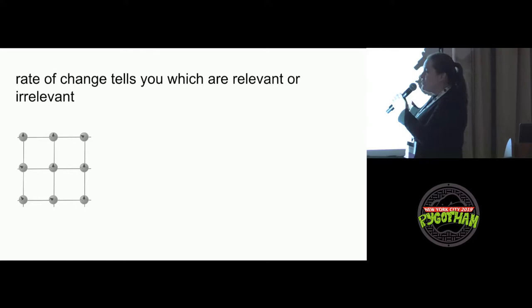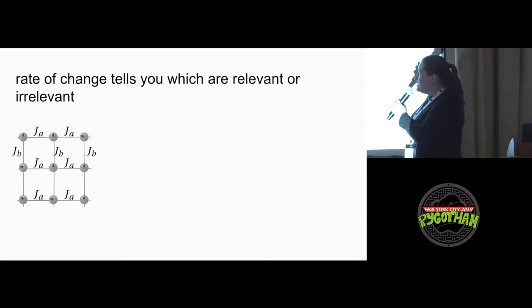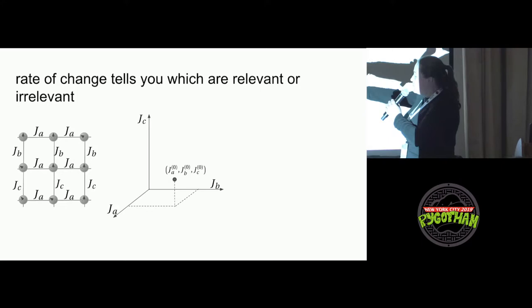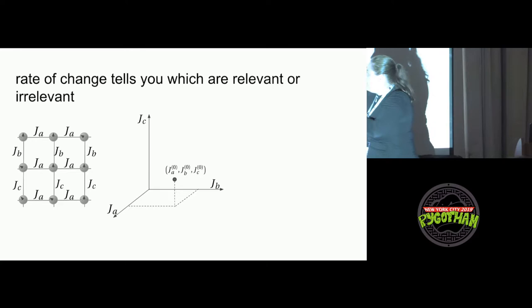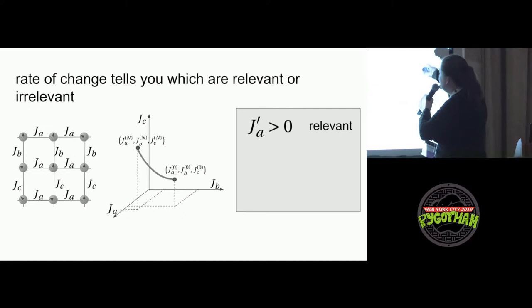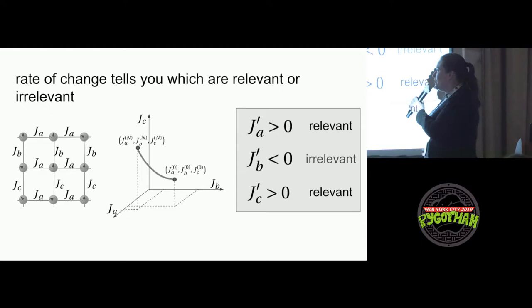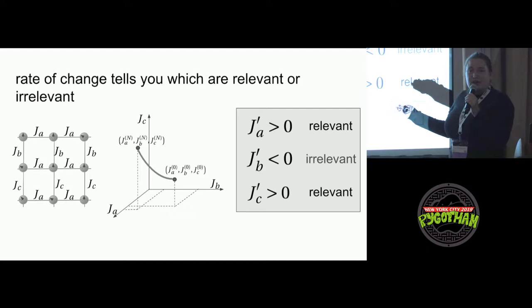So let's take a simple example. We have this lattice. We have one interaction on the horizontal ones. And then two different ones on the vertical ones. So this is a three dimensional space of interaction strengths. And we start at this point. This is our fundamental level. So after a few of these steps, we reach another point. So now we have different interaction strengths. And what we can actually see is that the first one increased a little. We call that relevant. The second one decreased, which we call irrelevant. And the third one also increased. So that's also a relevant variable. So relevant basically means relevant at the large scale that you care about.